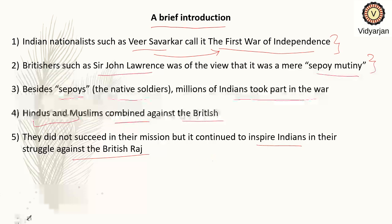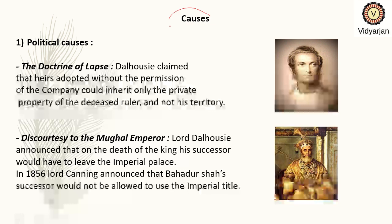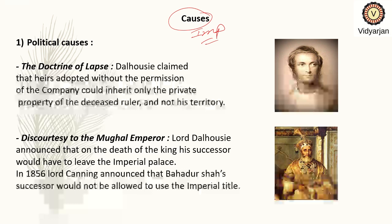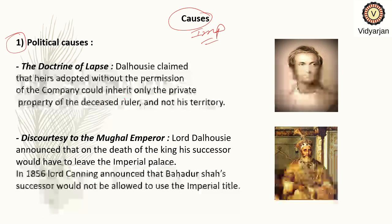Our next topic is causes, which is going to be one of the most important topics of this chapter. Under causes, the first is political causes. Under political causes, an important point is the Doctrine of Lapse, which is a very important political cause of the First War of Independence.